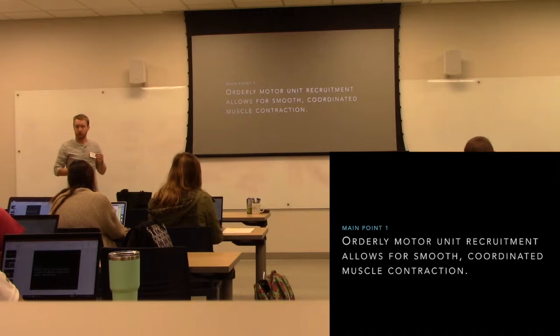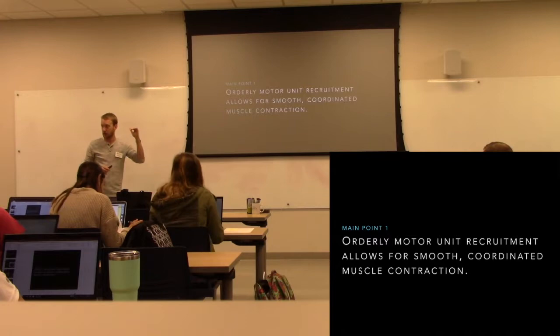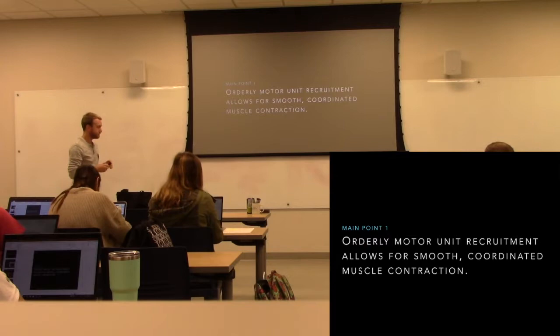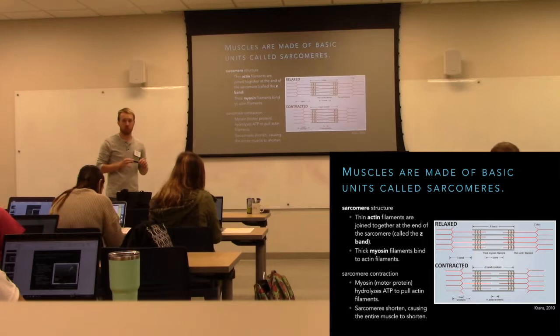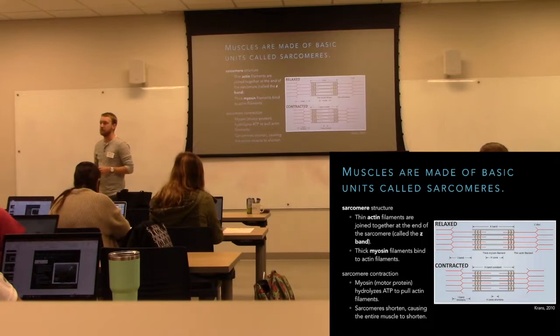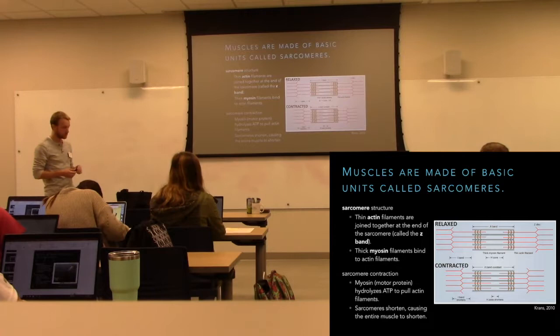You want to recruit the weak fibers first and smoothly work your way up to the most powerful fibers. Don't start off at 10 — start off at one and work your way up. First, just a bit on how muscles contract so we're all on the same page. We need to understand why we need calcium influx and why we need nicotinic acetylcholine receptors.